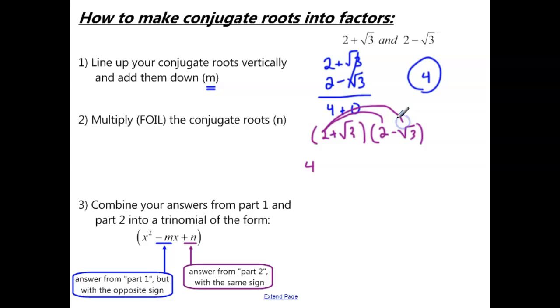The last terms, 2 times negative root 3 is negative 2 root 3. The inside terms is positive 2 root 3. And then the last terms, positive root 3 times negative root 3 just gives us negative 3. Now what you'll notice is that the middle terms are always going to cancel out. Negative 2 root 3 plus 2 root 3 is going to give us 0. So we're really just left with 4 minus 3, and that gives us 1.